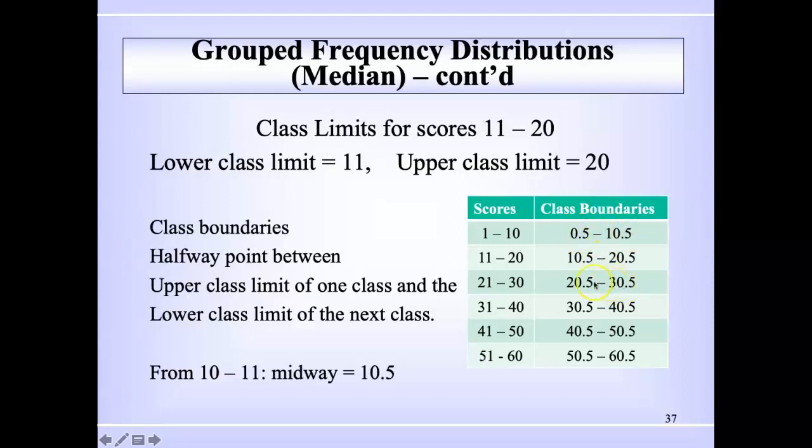So each class width is always 10.5 minus 0.5, which would be 10, or 30.5 minus 20.5, also 10, or 60.5 minus 50.5, which is also 10. So the class width is just the upper boundary minus the lower boundary.